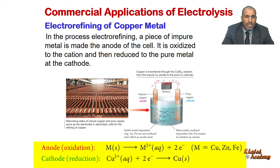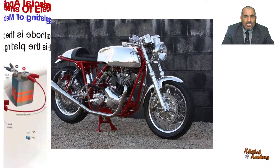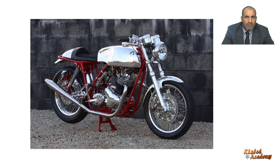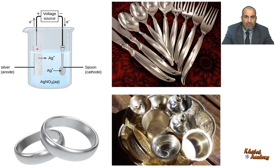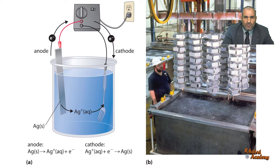Closely related to electro refining is electroplating — the coating of one metal on the surface of another using electrolysis. For example, steel motorcycle parts are often plated with chromium to protect them from corrosion, and silver plating is commonly used to make items of fine table service. The object to be plated is carefully cleaned and then set up as the cathode of an electrolytic cell that contains a solution of ions of the metal to be deposited.